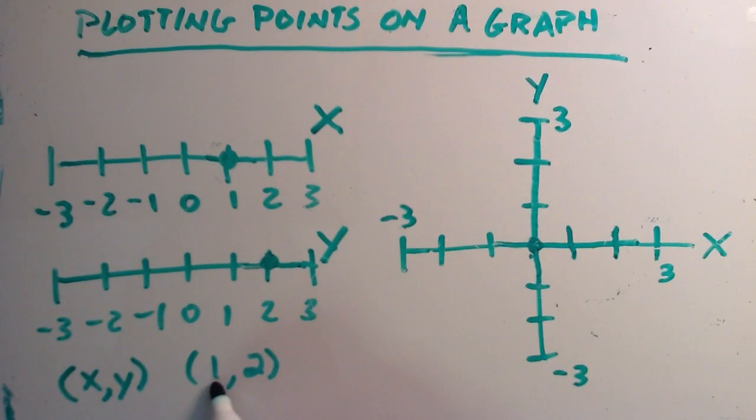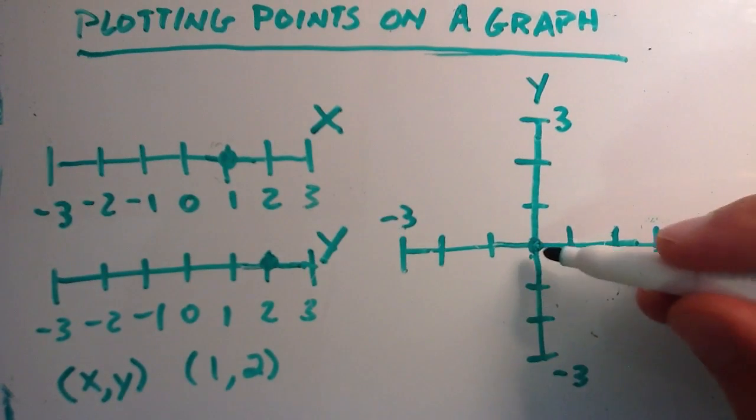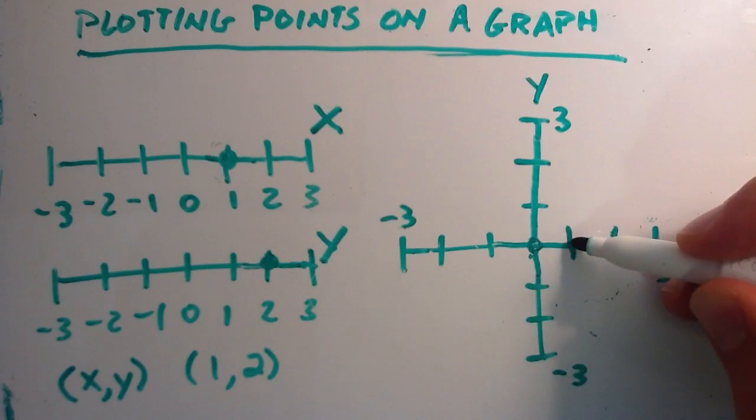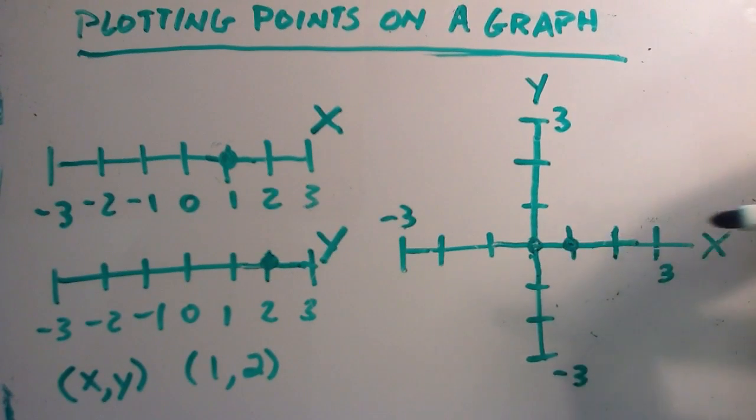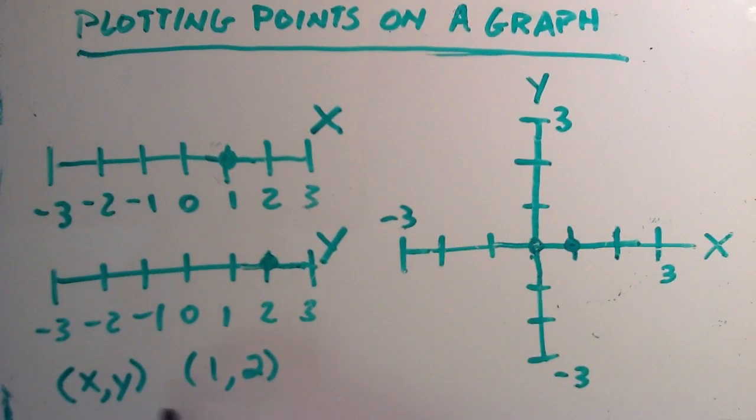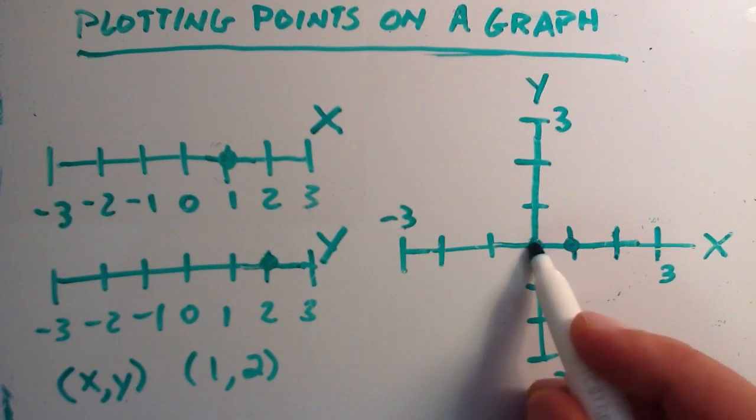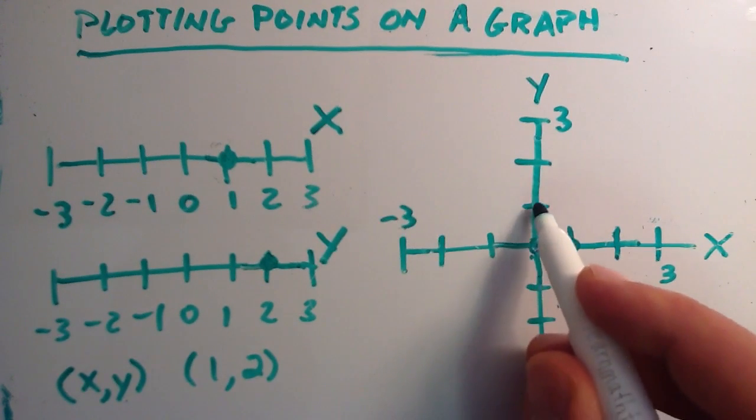So to plot this point (1, 2) on a graph, we simply take the x part, which is the 1, because it's first. We start at 0 and we count up 1. That would be right there. And the second part is the y component. And so we start at 0 again. And this time we count up to 2 on the y axis. So 1, 2.